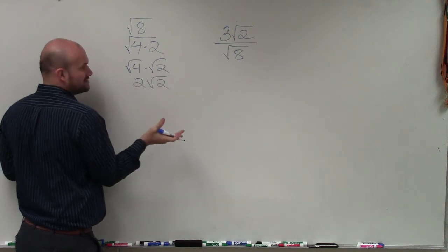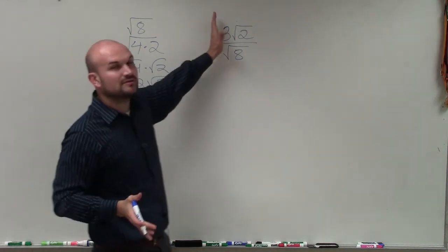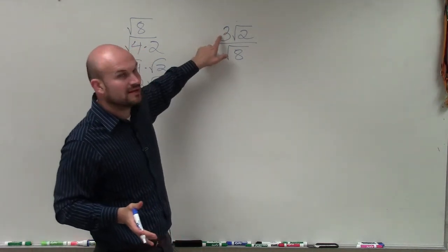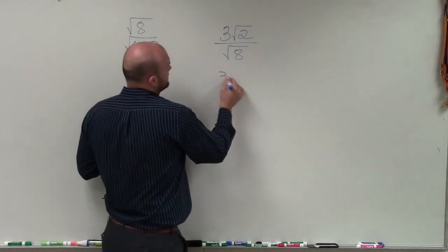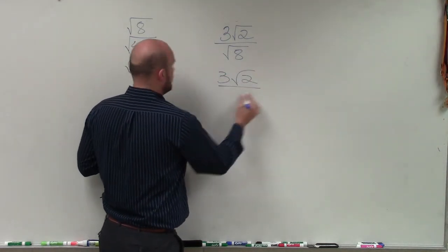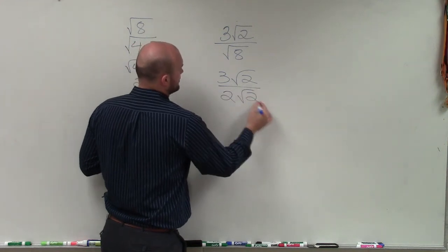The reason why I want to do that is a lot of times you're going to be able to simplify this, especially when you have a number on the outside, to help us out. So by rewriting this, I have 3 square root of 2 over 2 square root of 2.